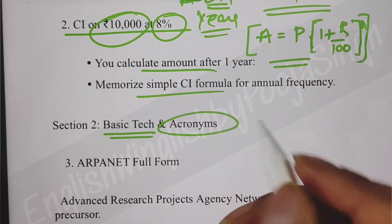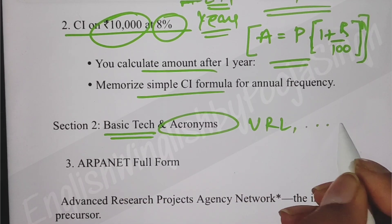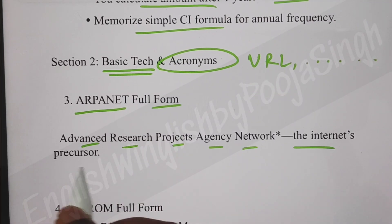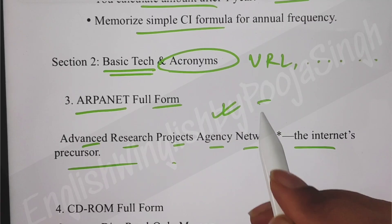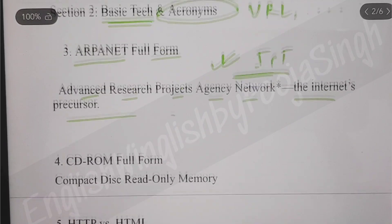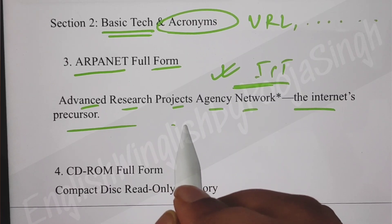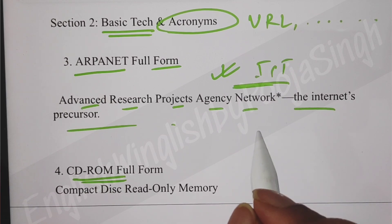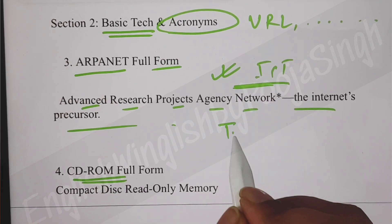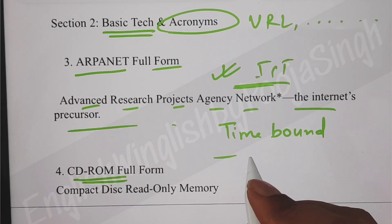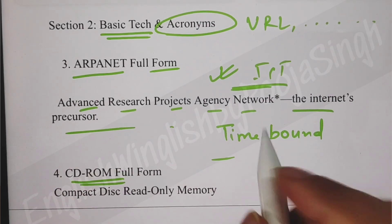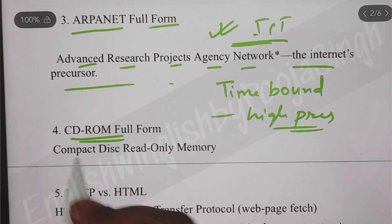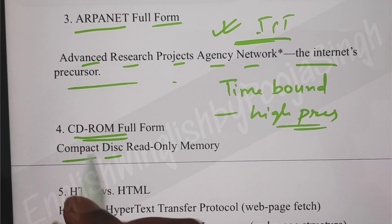Next, they asked about basic technology and acronyms. As I said they would ask about URLs and similar terms - ARPANET full form was asked: Advanced Research Project Agency Network, the internet's precursor. It was easy for those who read ICT nicely. Also, CD-ROM was asked - very easy: Compact Disc Read-Only Memory. For those saying I bring easy questions - here's the example, easy questions do come in examinations.